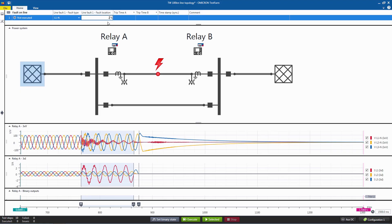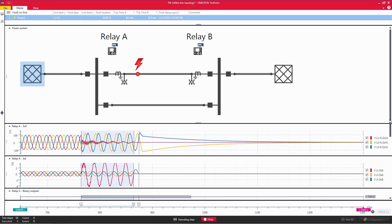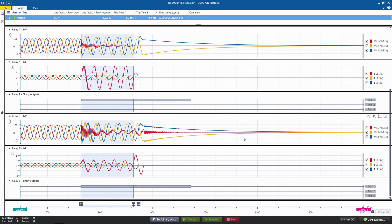With your power system already entered, you can simply place a fault and inject the signals by pressing a single button. It is really that simple.